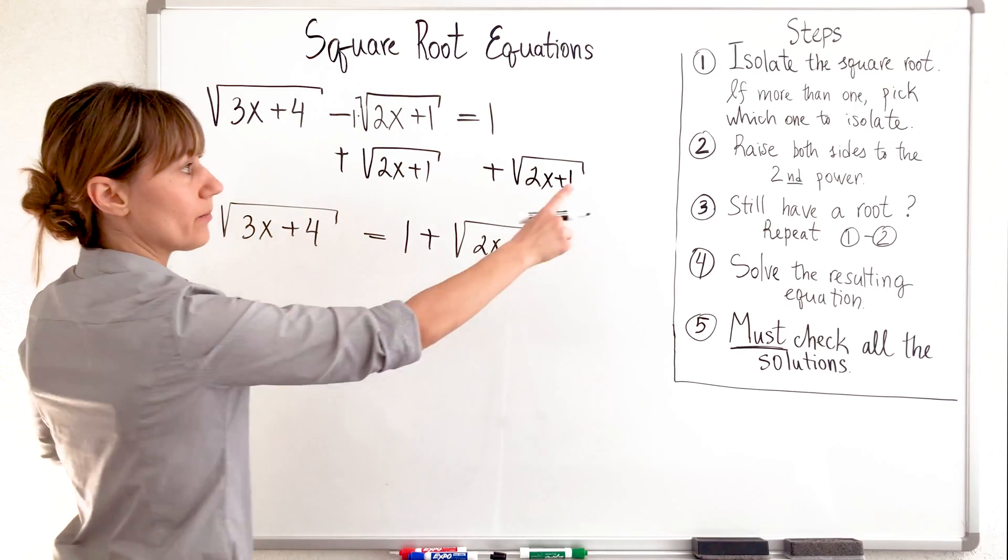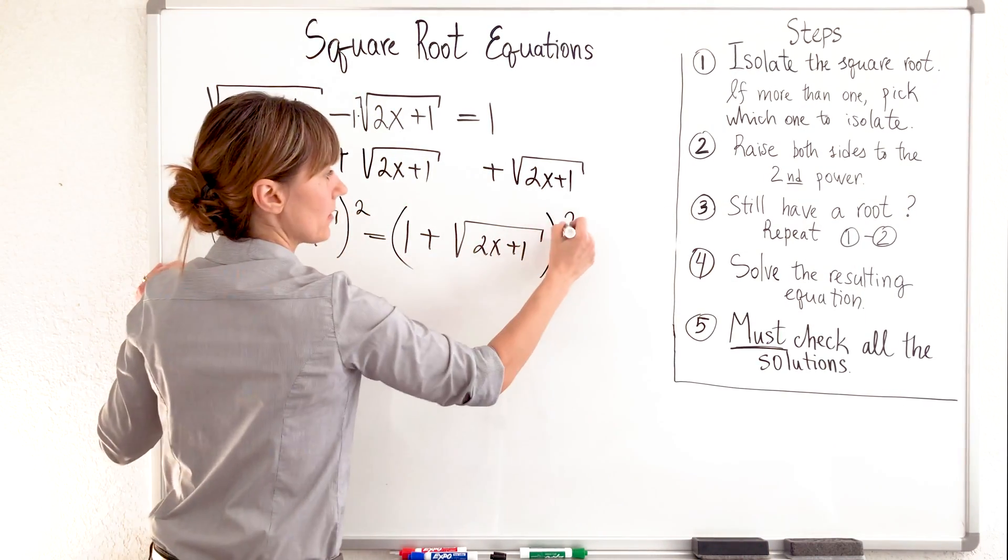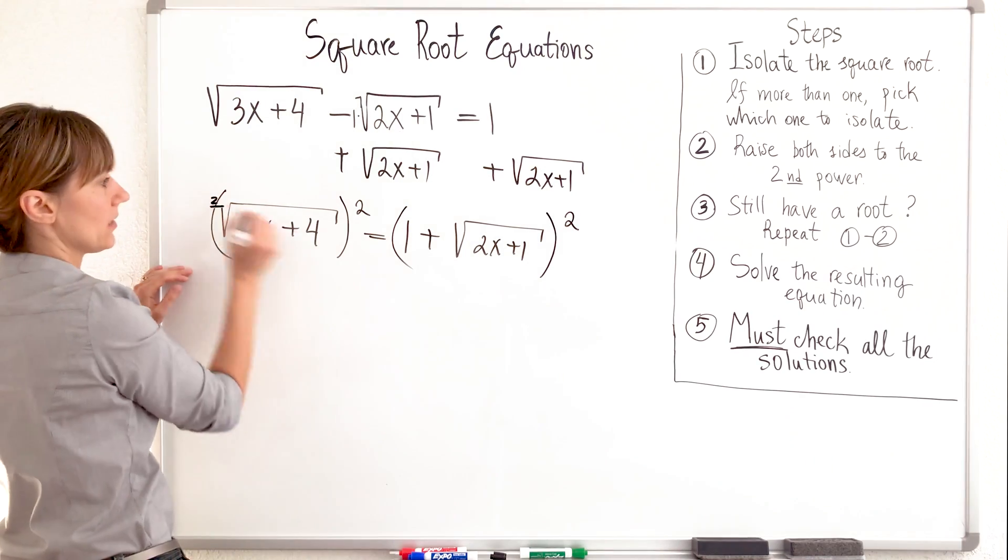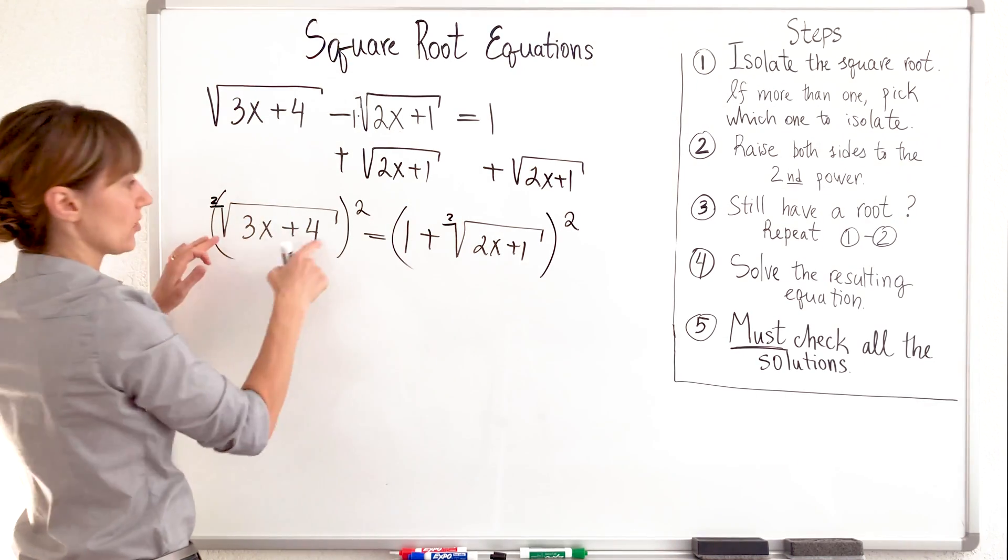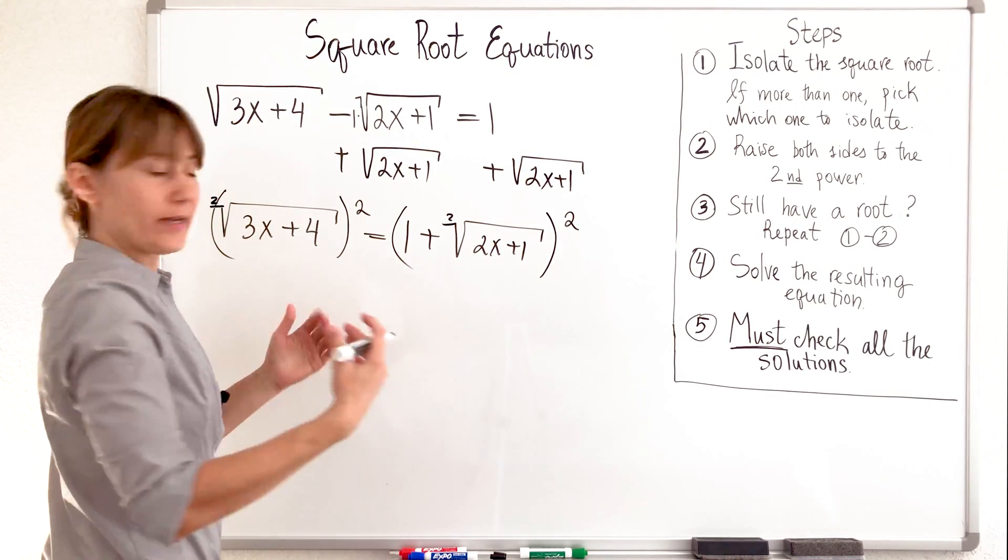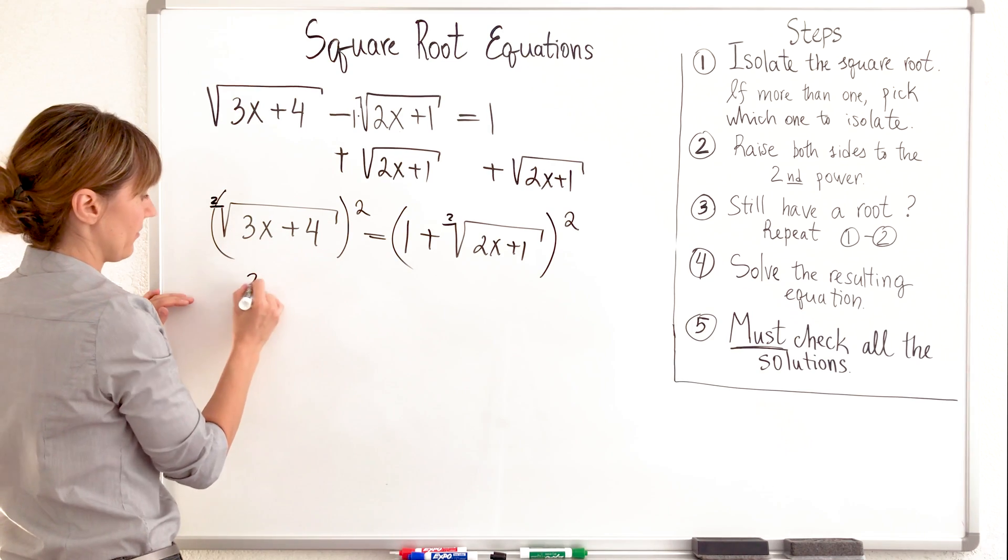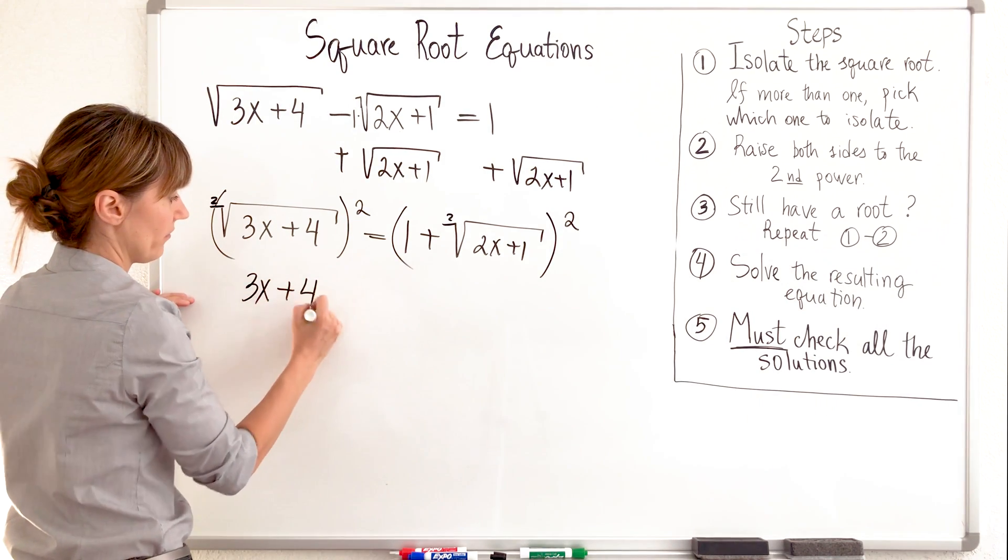Here we go. I'm raising both sides to the second power. Why? Because I have a square root right here. I have a square root, so I want to lift it off and extract my variable underneath. Let's do it. So, squaring this square root, I have 3x plus 4. Very good.